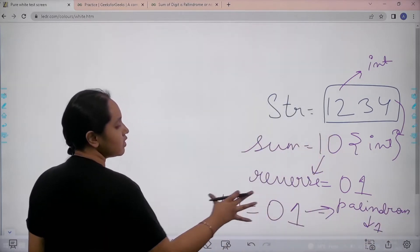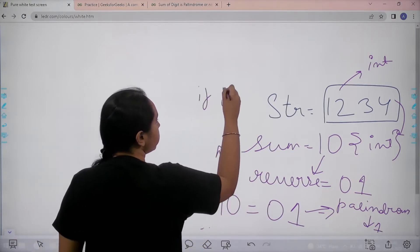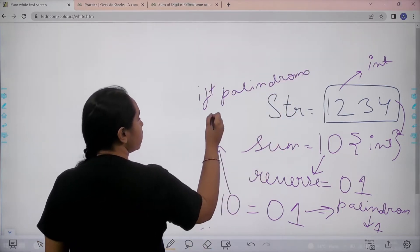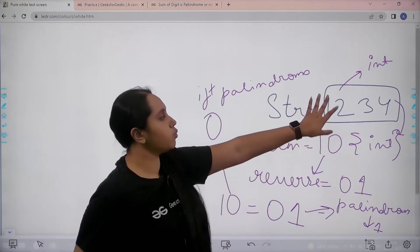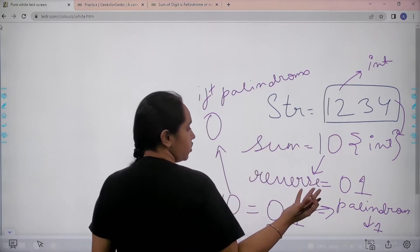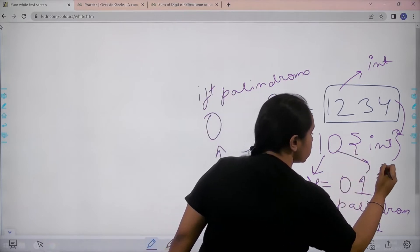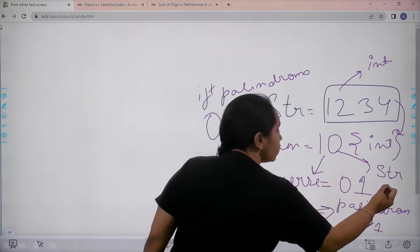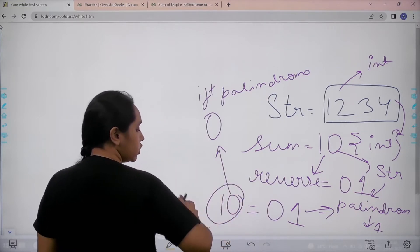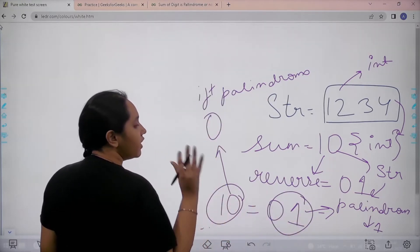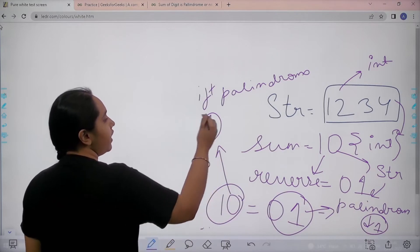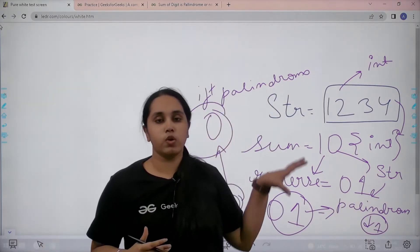But as you can see, this is not a palindrome. If it is not a palindrome, then what do you need to do? Then you need to print 0. So basically first you need to convert the given string into integer, calculate its sum. After calculating its sum, you need to convert it back into string. After converting it back into string, you need to find its reverse. After finding its reverse, you need to compare the original sum with the reverse sum value and check if it is a palindrome or not. If it is a palindrome, print 1; if it is not a palindrome, print 0. This is what you have to do in this question.